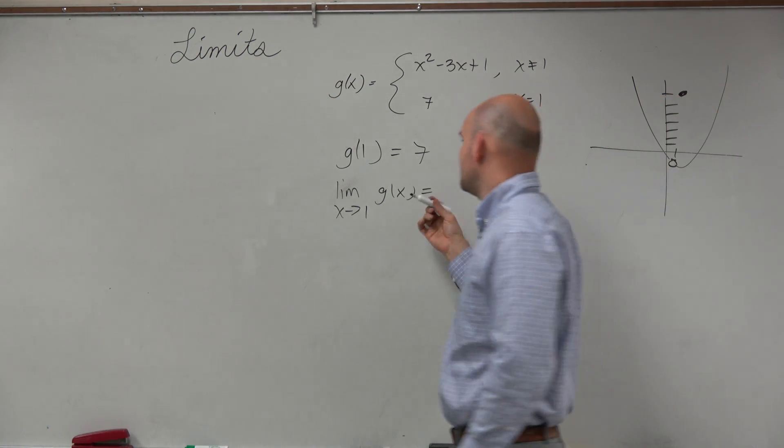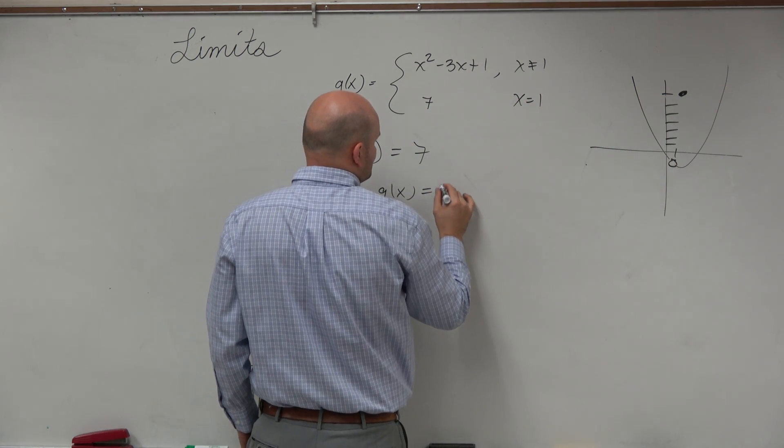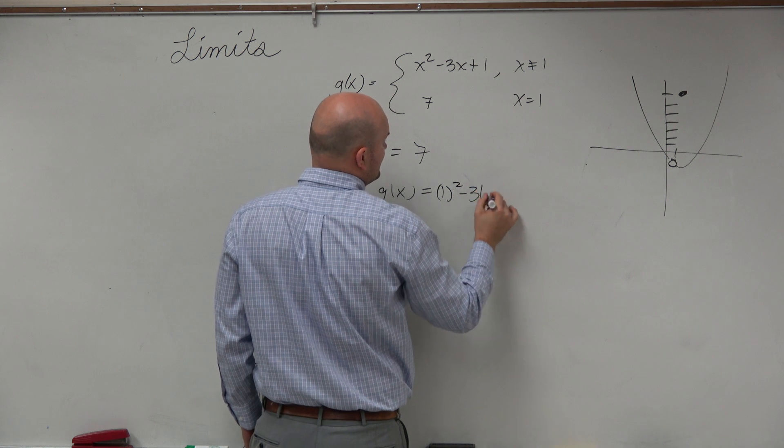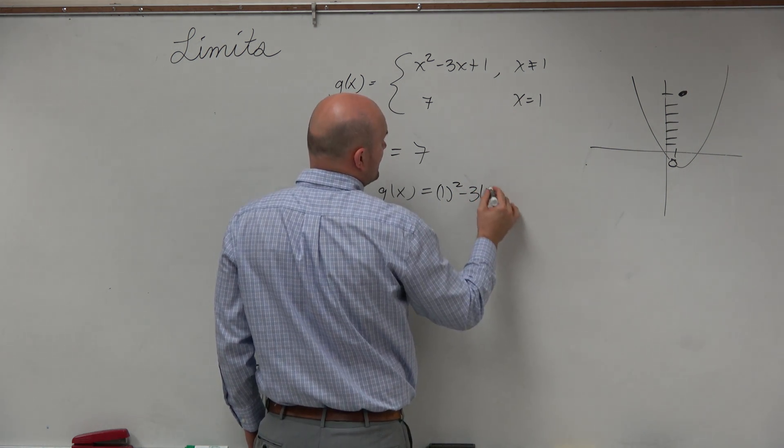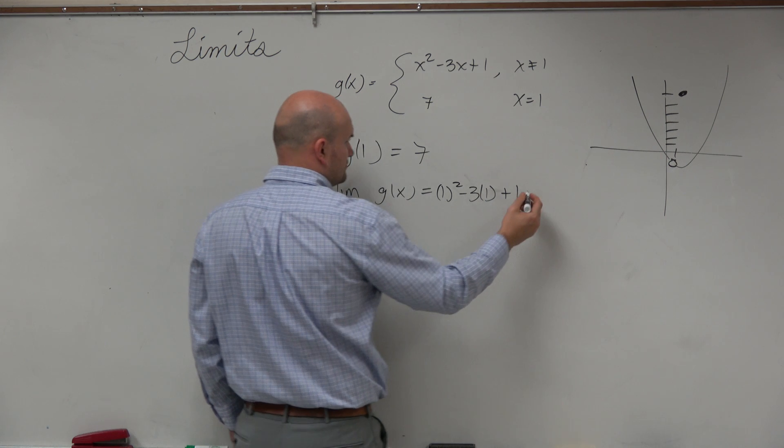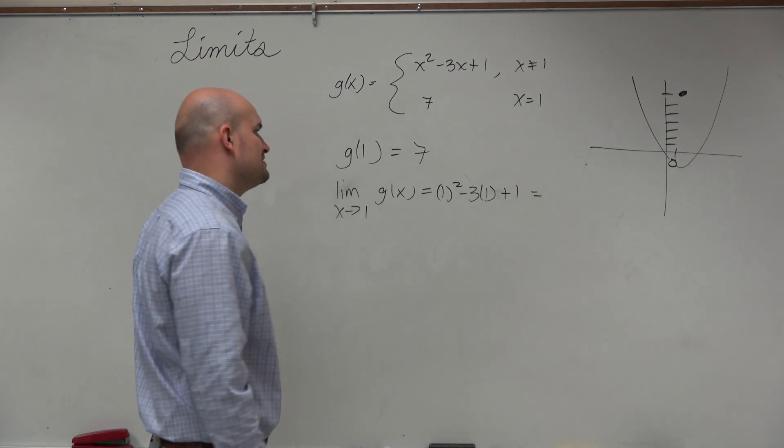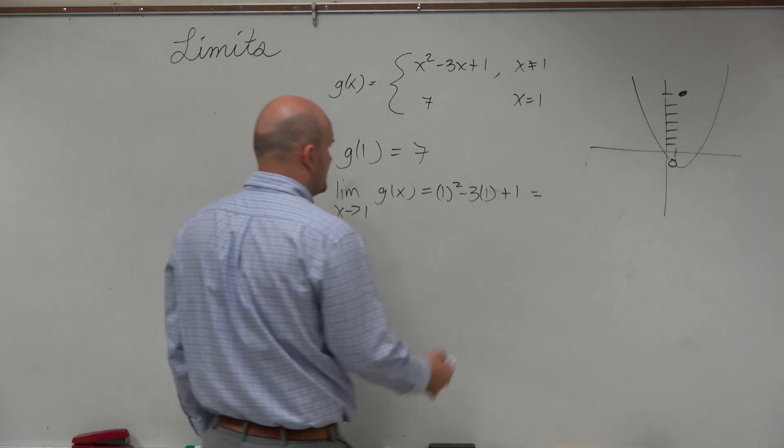So we can apply just direct substitution. It's not defined for the graph, but it's the point that we're approaching. So we'd have 1 squared minus 3 times 1, so that's negative 2 plus 1 equals negative 1.